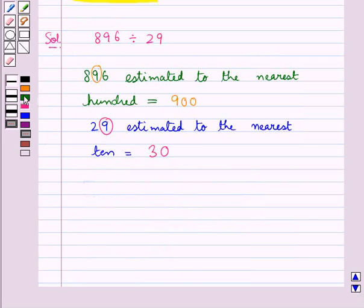Now we can easily divide 900 by 30. This would be equal to 30.